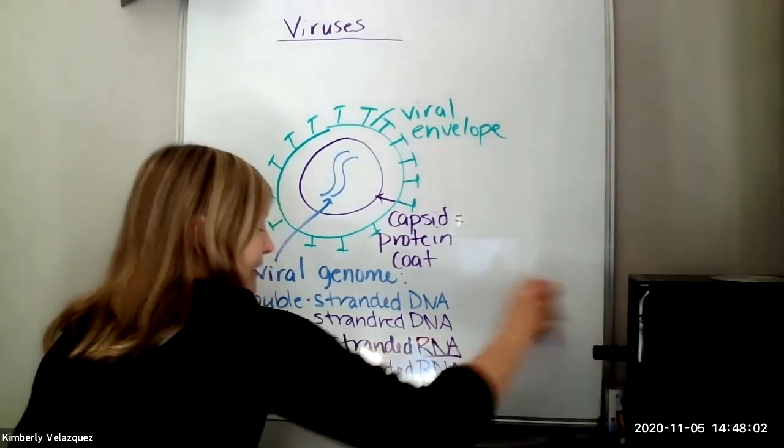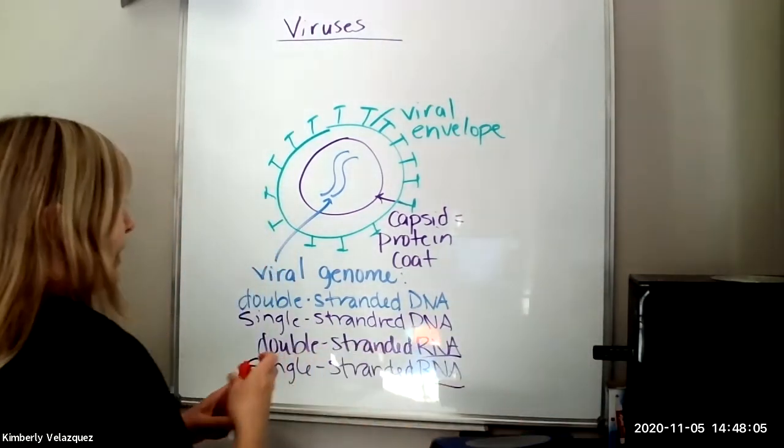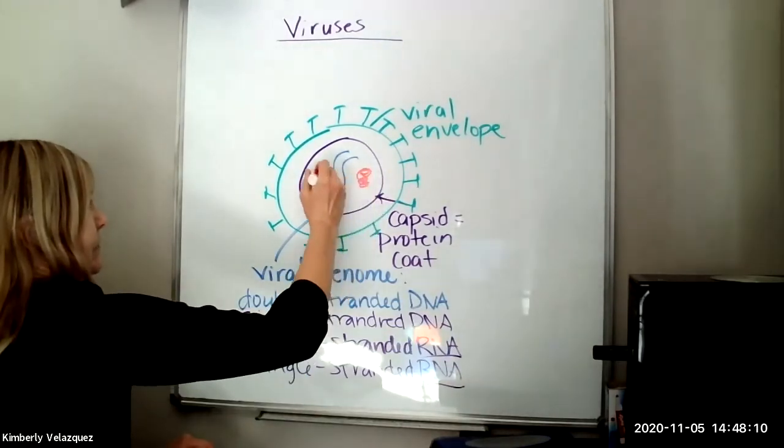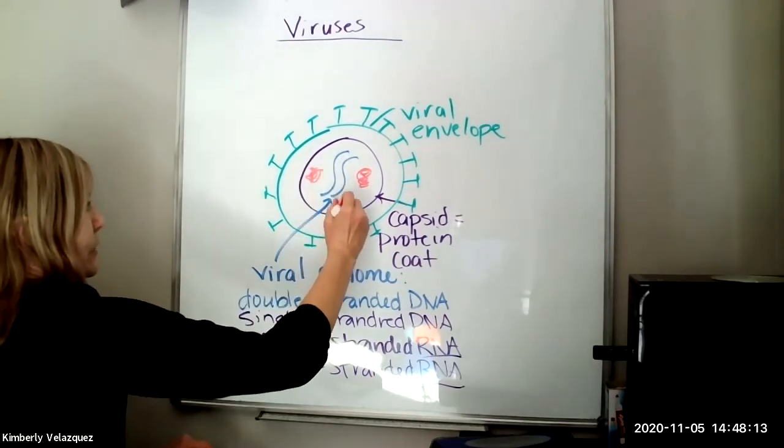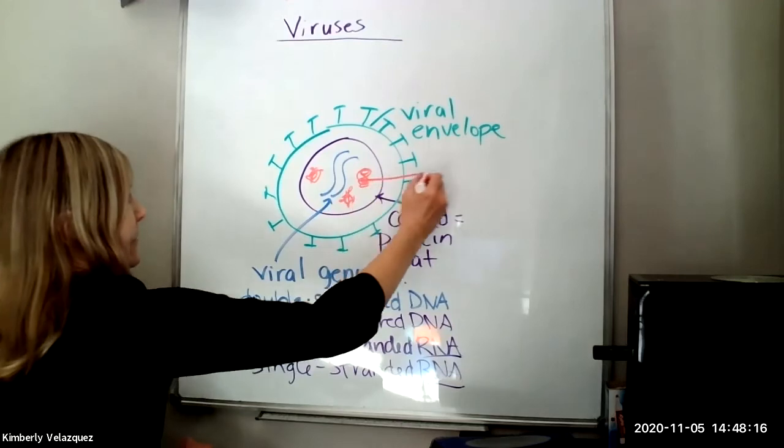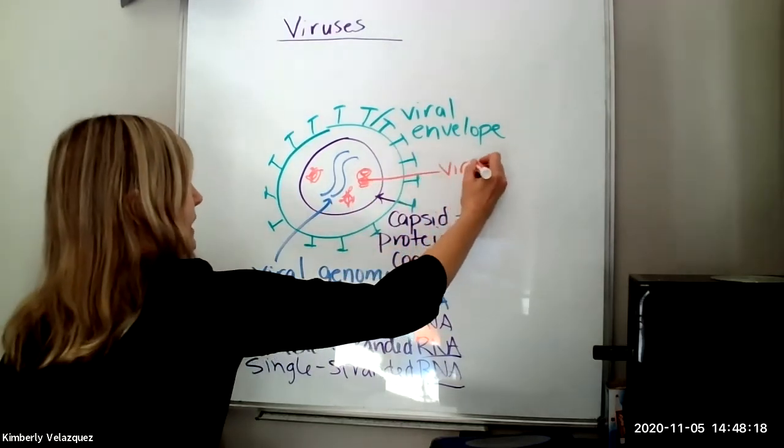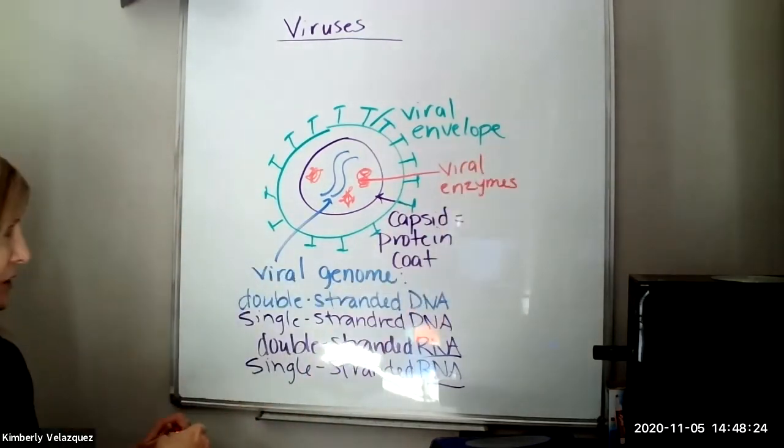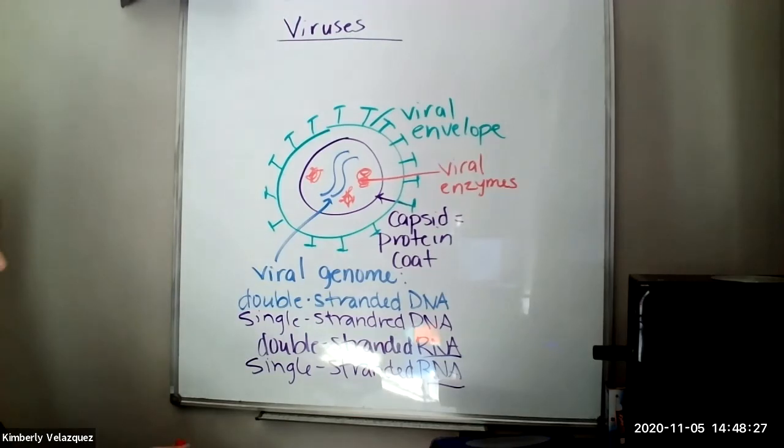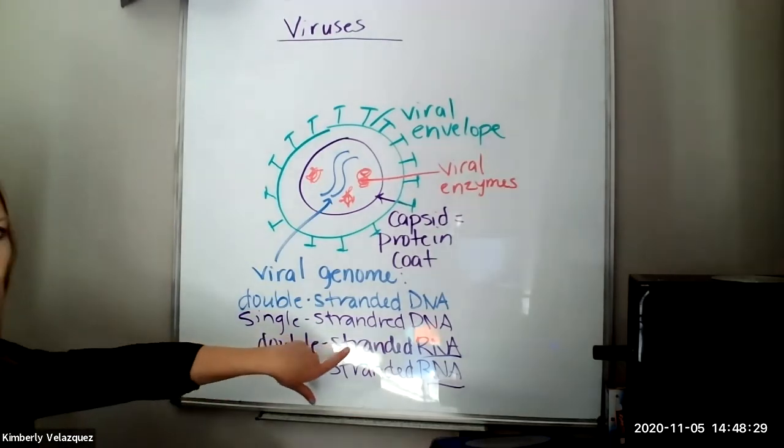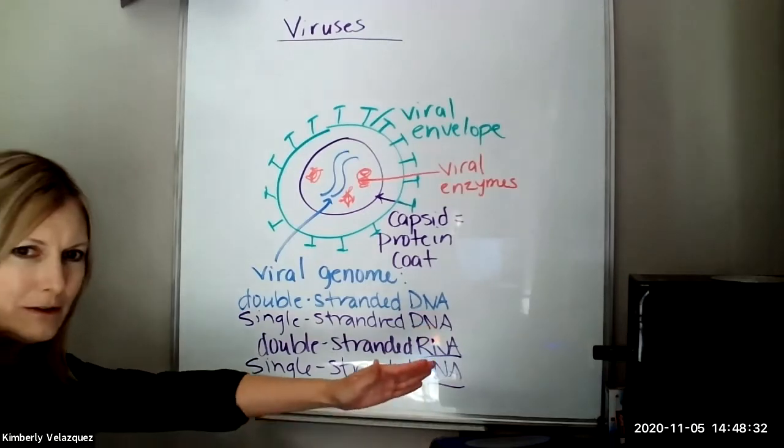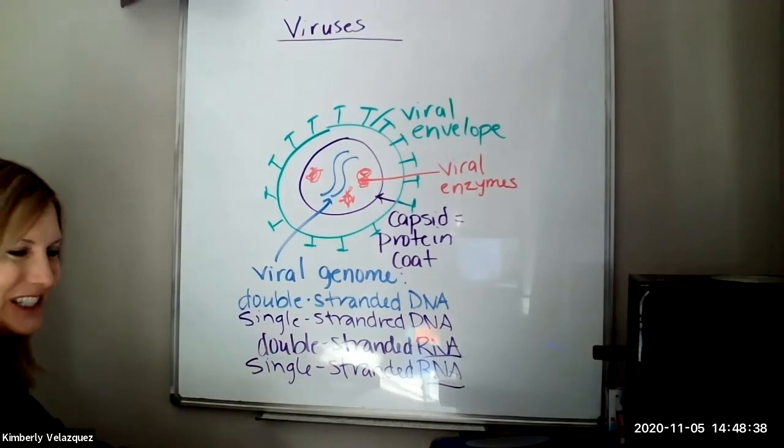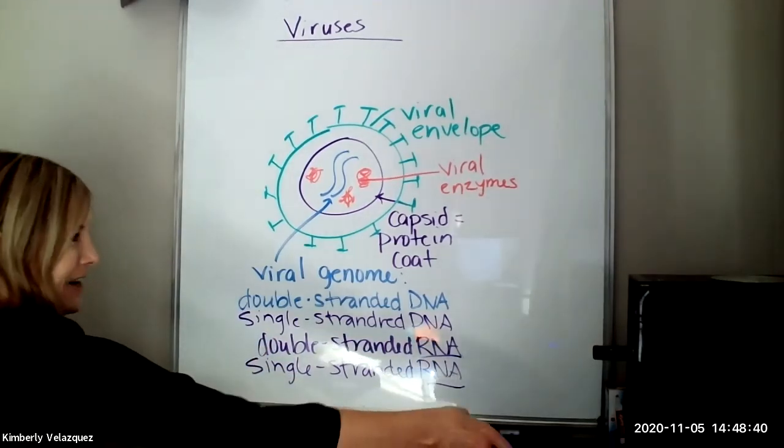So in green, we have the viral envelope and some important proteins associated with that envelope. Also, on the inside of the virus, there are some key enzymes, three in particular that you're going to learn about today. So I'm going to draw just some proteins here. These are the viral enzymes. And I'll talk about what those viral enzymes are as we go through the viral reproduction cycle. Again, I apologize. This is double-stranded RNA and single-stranded RNA. I don't know how to get light on the board and not have a reflection on the board.